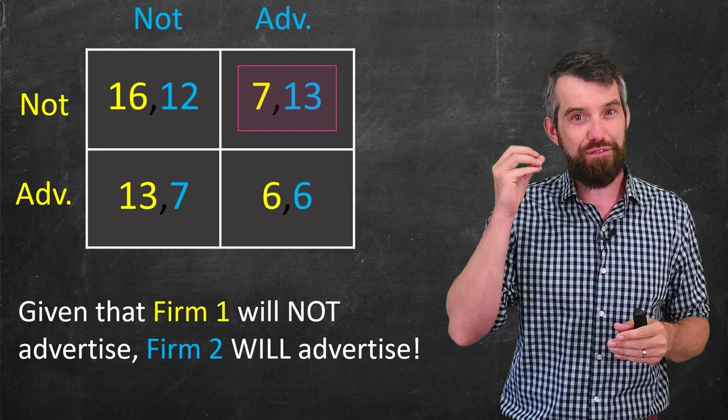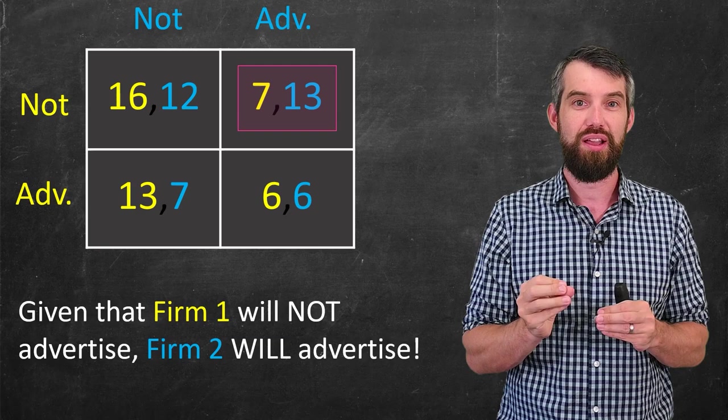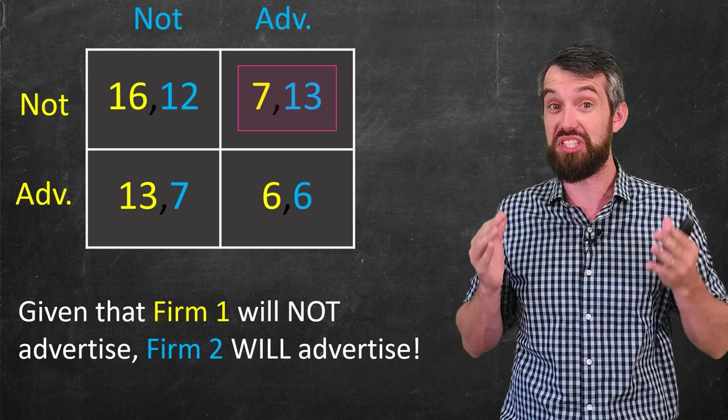has led to the reverse situation when you add in the advertising. It's now firm two that has this big incentive to do the advertising. And they actually end up with more profit. They end up with more profit of 13 than firm one seven. But there's nothing that firm one can do about this. Because if they start advertising, they're going to go down from seven to six. So they are still nevertheless better to not advertise.